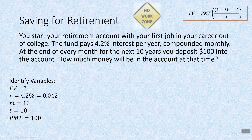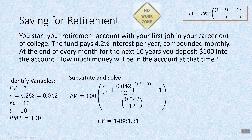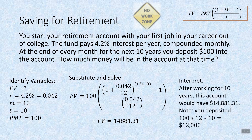Let's not forget our formula — it's shown above. Substituting in: future value equals 100 times the quantity (1 plus r over m) to the power of mt, minus 1, then divide by i. When you enter this, you should get $14,881.31. After working for 10 years, this account would have $14,881.31.